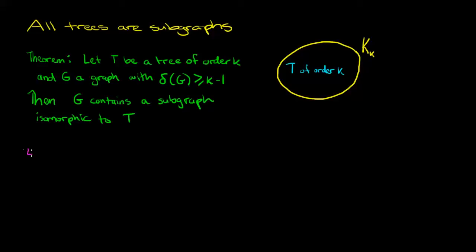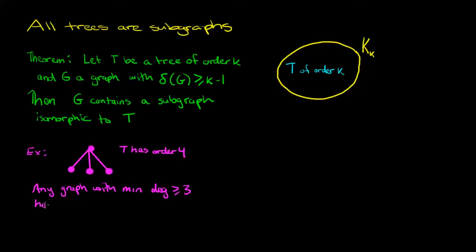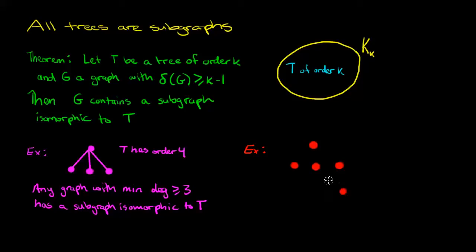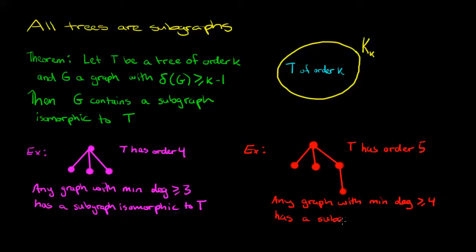Let's take a look at a couple of small examples. Here I have a tree of order four, and the theorem tells us that any graph with minimum degree at least three has a subgraph isomorphic to t. This is not hard to believe because in any graph with degree at least three you'll find a vertex which has three neighbors, and that's what t is. Here we have a tree of order five, and the theorem tells us that any graph with minimum degree at least four will have a subgraph isomorphic to this tree. It doesn't matter how the tree is drawn — it could be any tree of order five.